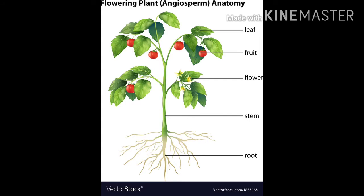First, the parts of the plant. The parts of the plant are leaf, fruit, flower, stem and the root. These are the parts of the plant.